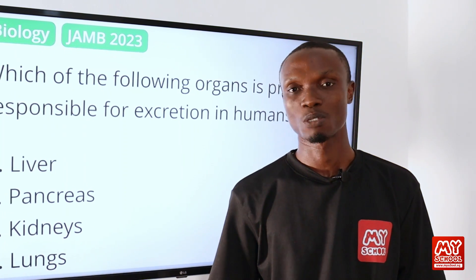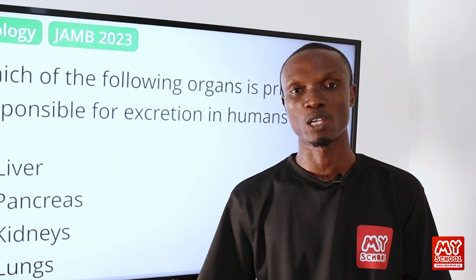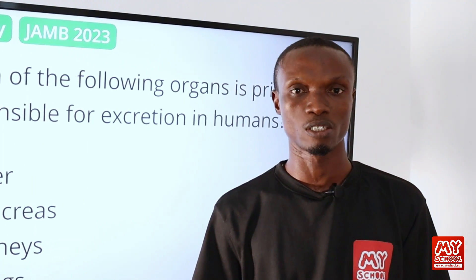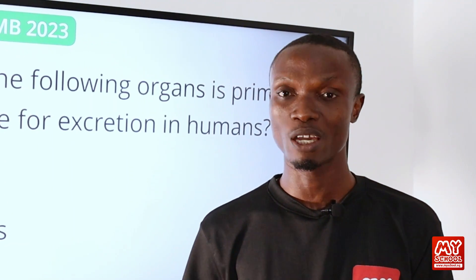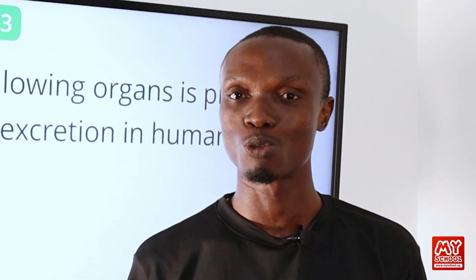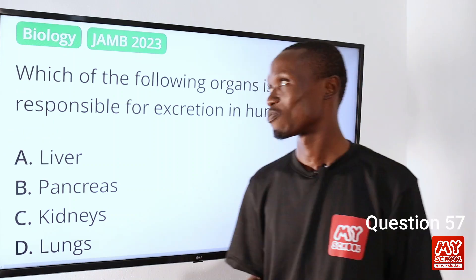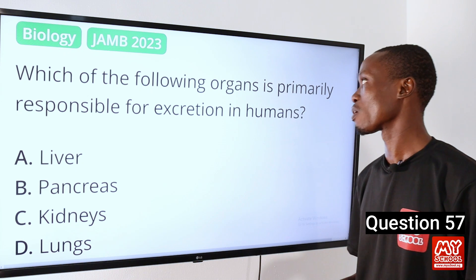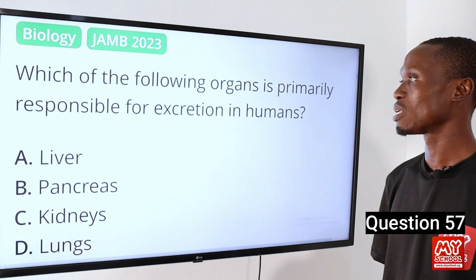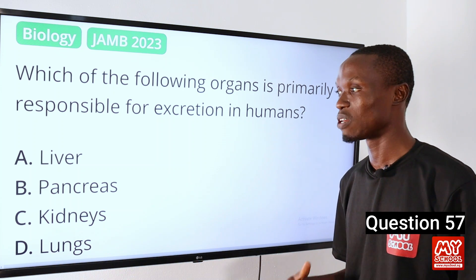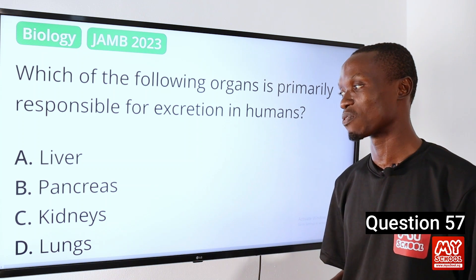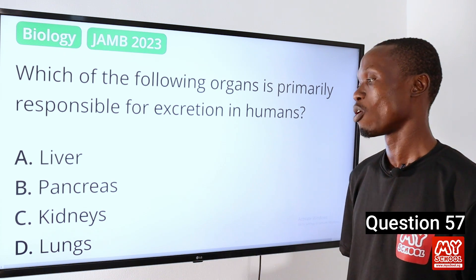Do you have any questions to ask? Please feel free to ask by clicking on the link in the description below, which will take you to my school website where you can ask all your questions — a solution will be provided within a short period of time. Moving on to question 57. Which of the following organs is primarily responsible for excretion in humans? A. Liver. B. Pancreas. C. Kidneys. D. Lungs.